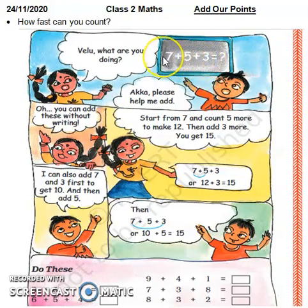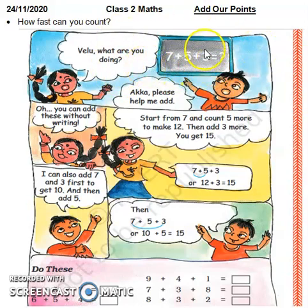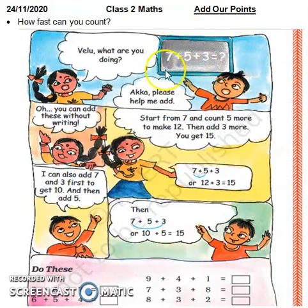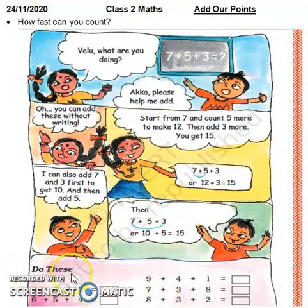तो add करने में आप कैसे भी add कर सकते हो। 5 प्लस 3 add करके भी 7 add कर सकते हो। उल्टा भी कर सकते हैं: 3 प्लस 5 प्लस 7 — तो 3 प्लस 5 करते हैं, 3 के बाद 5 count on करते हैं: 4, 5, 6, 7, 8 — तो 5 प्लस 3 कर लिया तो 8 आया। और यह 7 — तो 8 प्लस 7: 9, 10, 11, 12, 13, 14, 15 — तब भी आंसर same रहा। राइट।